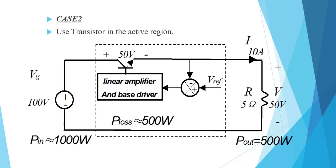Next, we use a transistor in linear active region, like a linear amplifier with base driver circuit. Here we also have 50 volts drop across the transistor, with the same current of 10 amperes. So 50 times 10 gives us 500 watts of losses. This approach also has the same problem with significant losses.